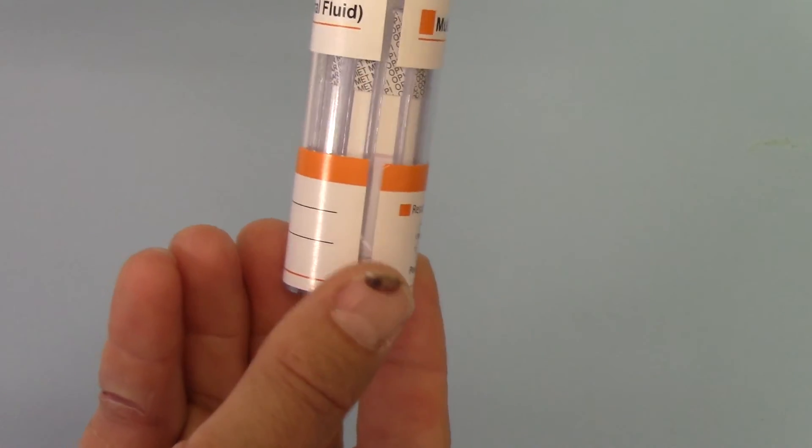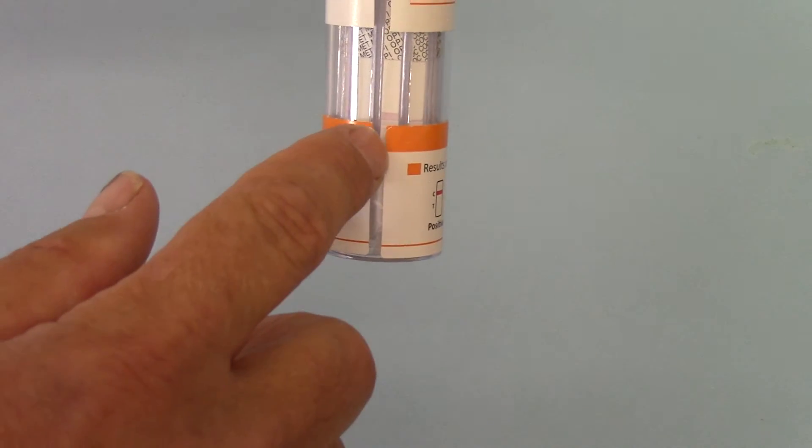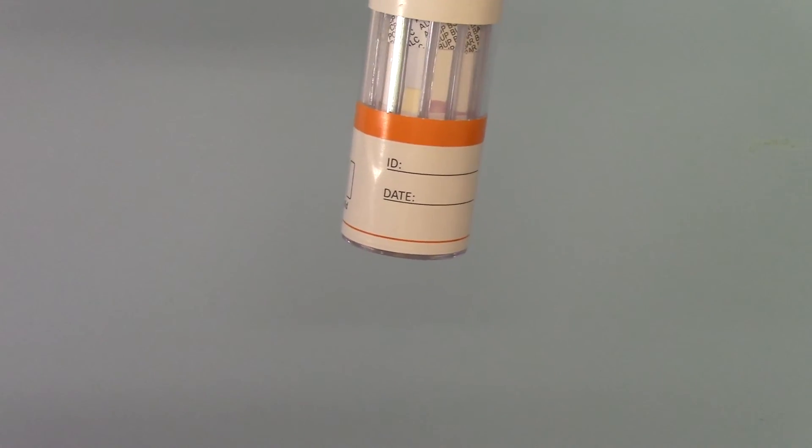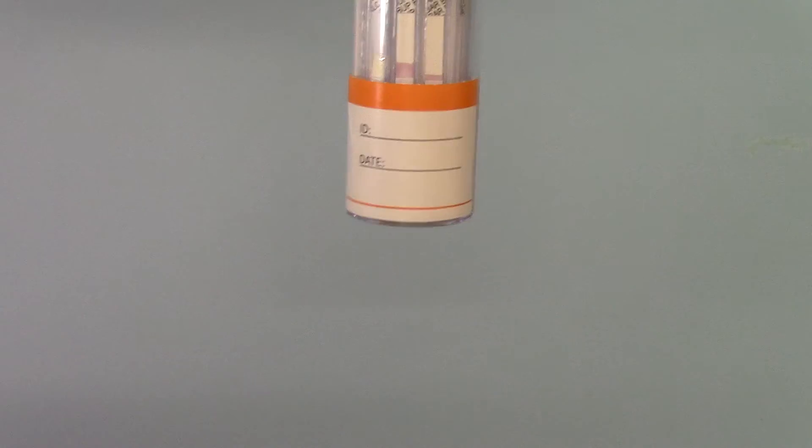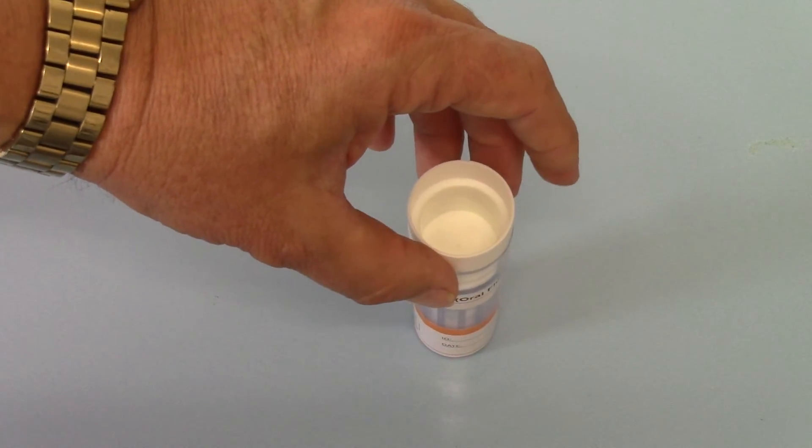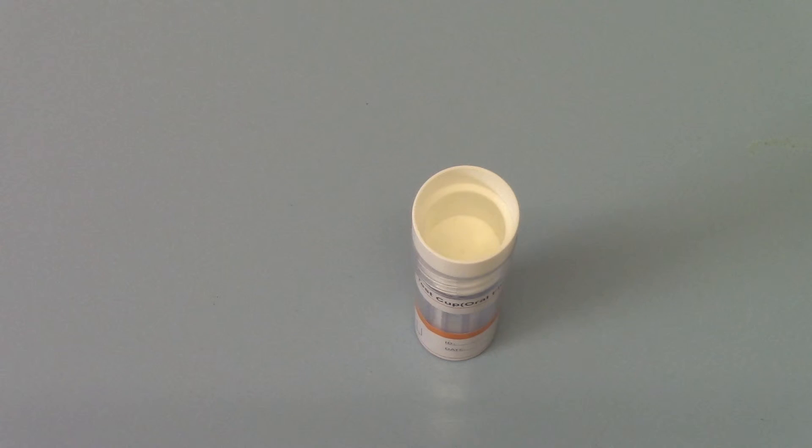And what you will rapidly see if an adequate saliva has been donated is these pink membranes starting to run as the saliva osmotically absorbs up the membranes. And you'll see here this one's starting to run. They will run at different speeds. That's quite normal. Again, best thing to do is to leave that completely flat. Start your timer once it's been put together. And then we're looking to come back and read the results at 10 minutes. So what we'll do now in part four is edit through and show you the results as they show on this particular test.